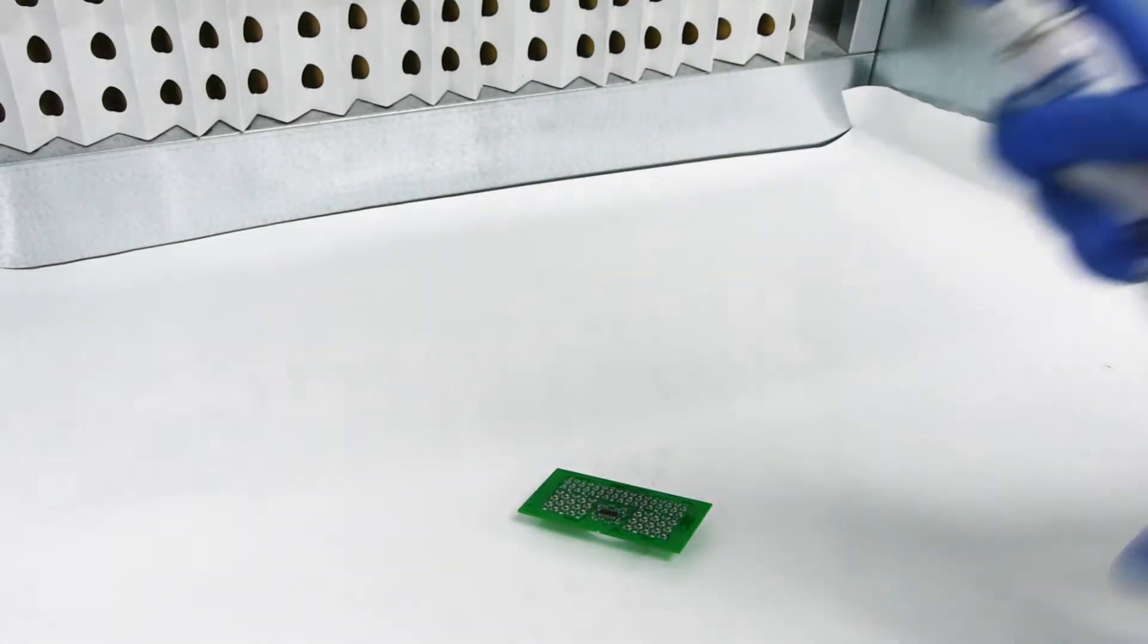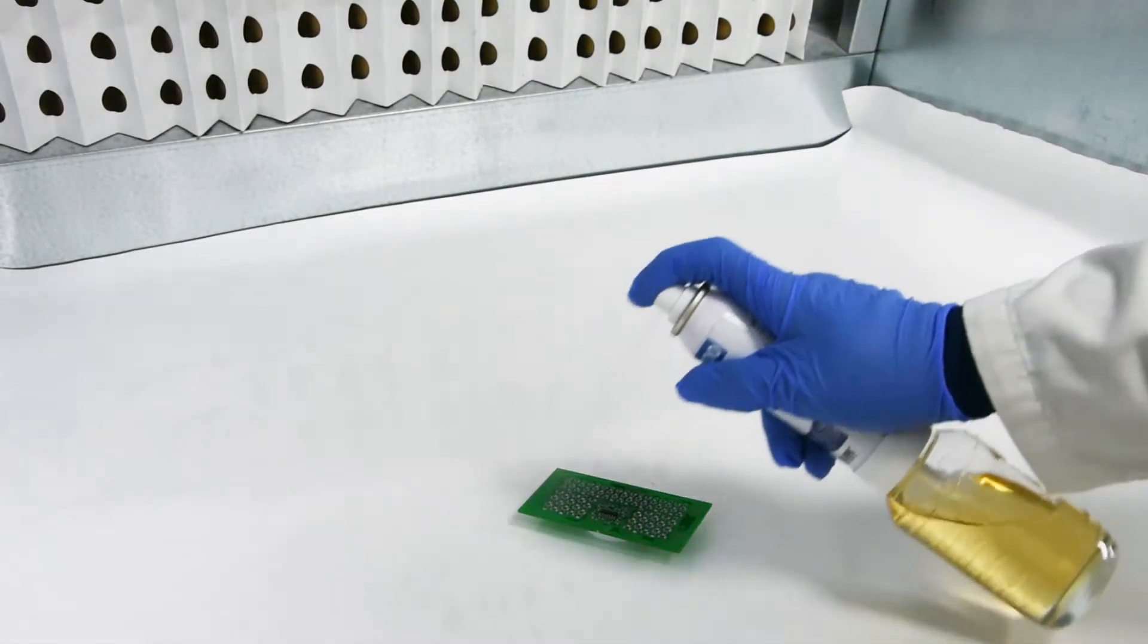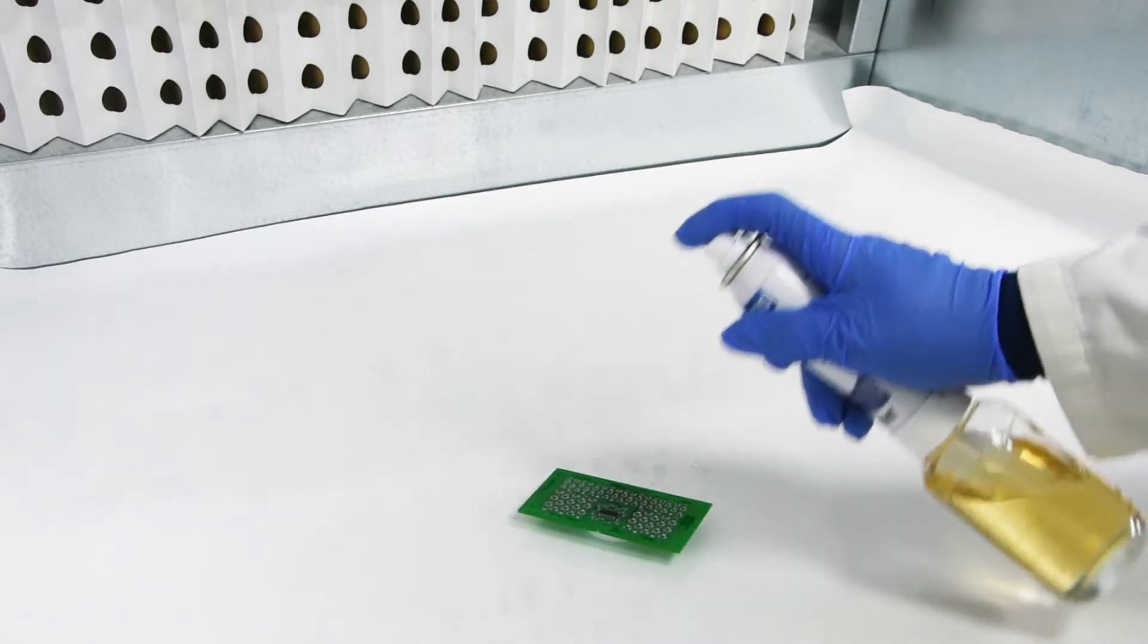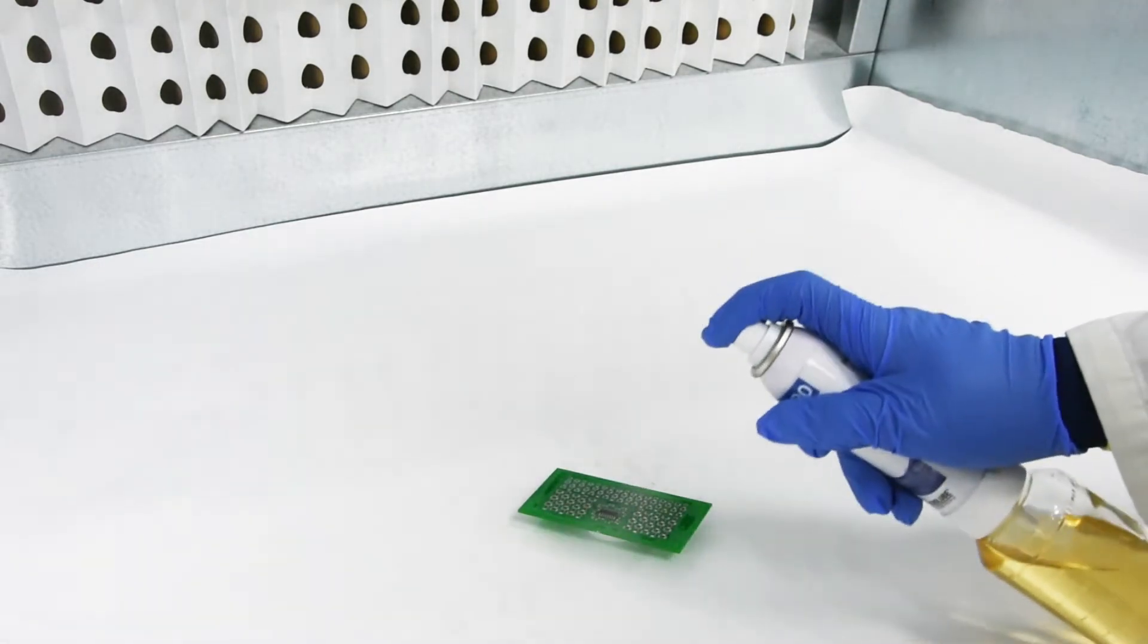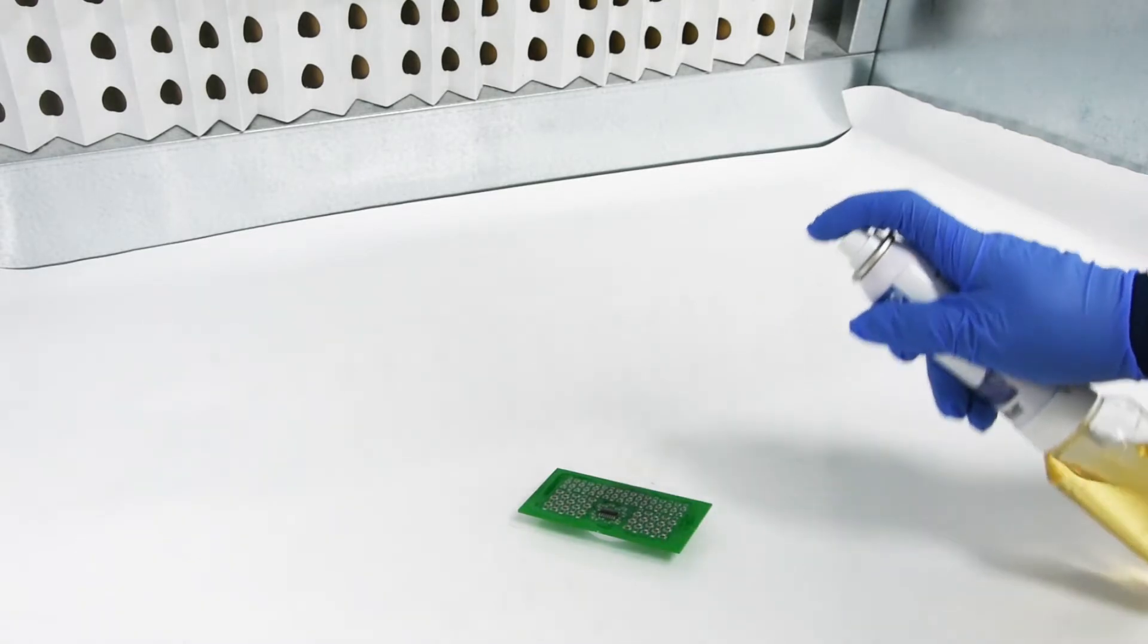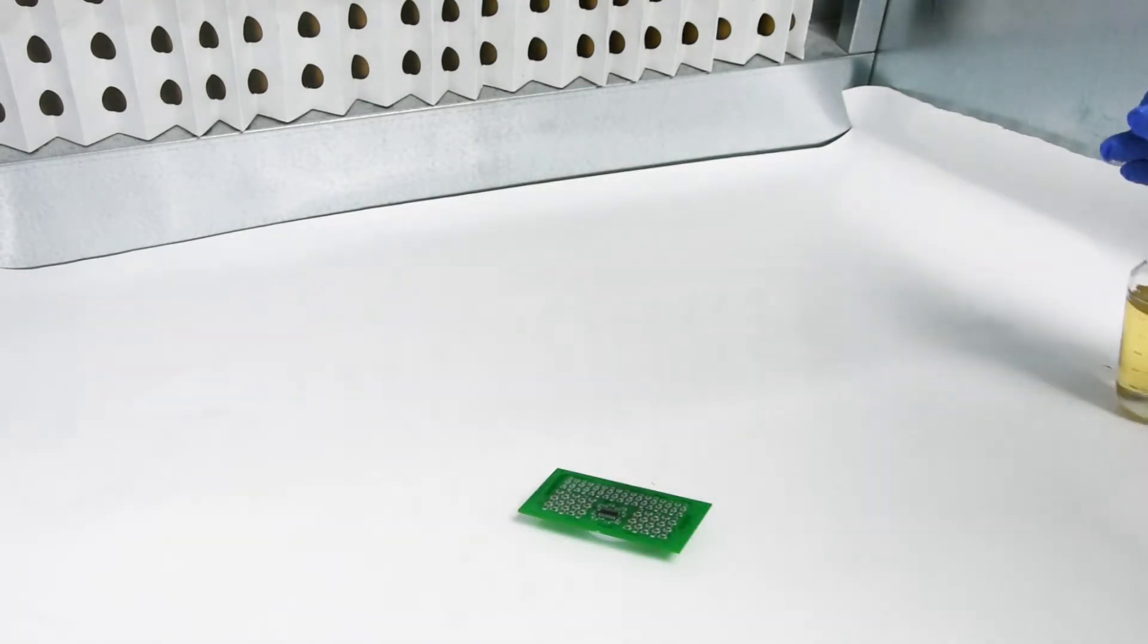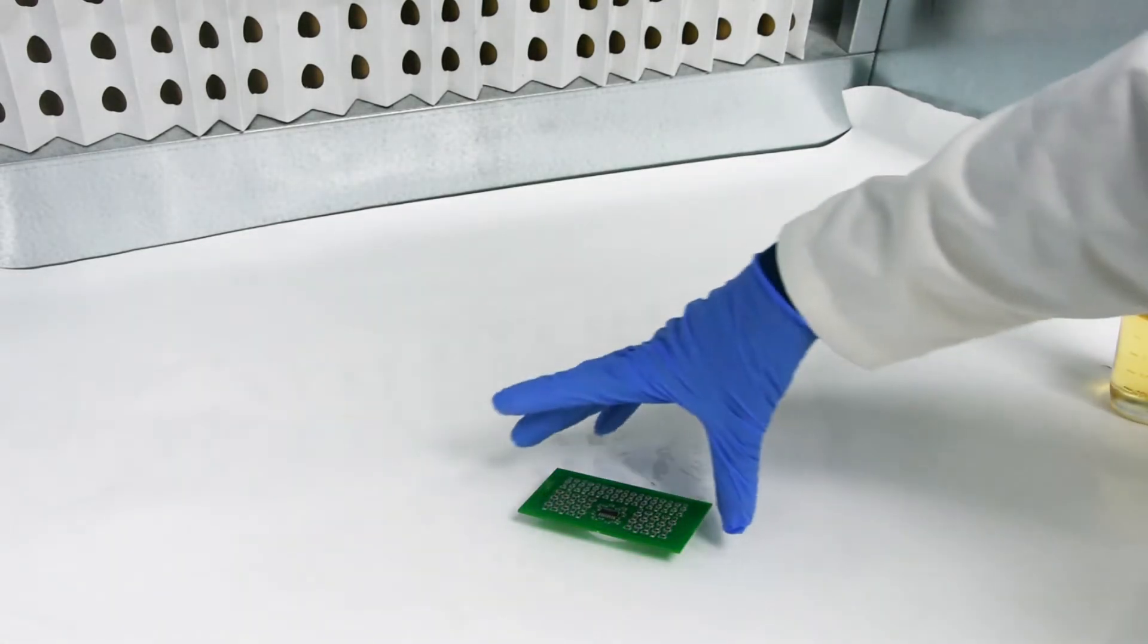Spray some material on a piece of scrap and allow sufficient time to allow the product to flow up through the dip tube and through the actuator nozzle on the sprayer. Spray onto the substrate using slow, overlapping passes.